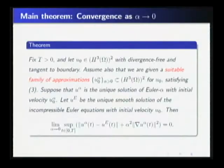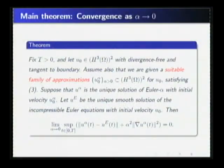Now we state our result, the convergence as alpha goes to zero. Fixed time, this global solution. Fixed time that U0 in H3 with divergence-free and tangent boundary. Here U0 is H3. And assume that we are given a suitable family approximation U0 alpha in H3 for U0, satisfied the condition three.